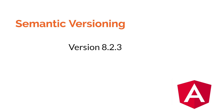This is the history of Angular. Angular follows Semantic Versioning. For example, version 8.2.3: 8 is the major version, 2 is the minor version, and 3 is the patch version. Fixing bugs changes the patch version, while new features change the minor version. The latest version is Angular 9, released in February 2020.